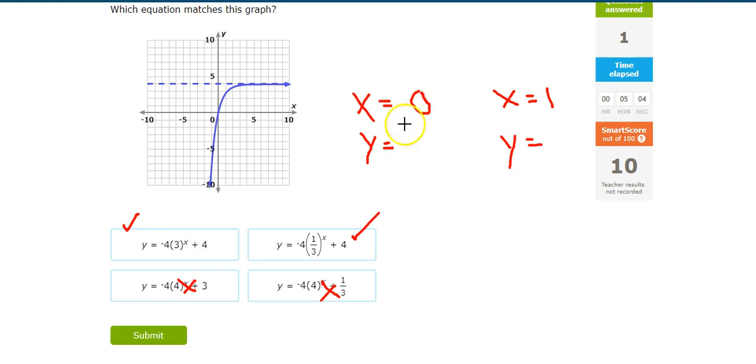So at x equals 0, y equals 0. At x equals 1, I need something like a 3. Okay. x equals 1.